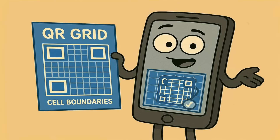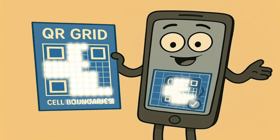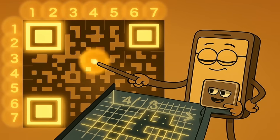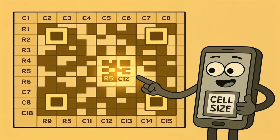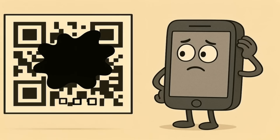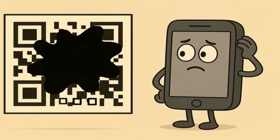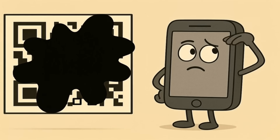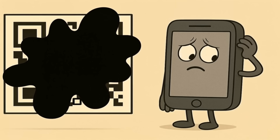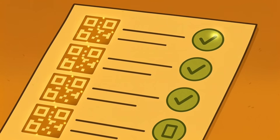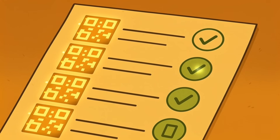Now the phone doesn't have to guess where each little square begins and ends. It knows the exact coordinates for every single dot in the message. It knows it can go to row 5, column 12, and find a specific piece of info. This is incredibly important. Without the timing pattern, the phone would be lost — unable to tell if a big black splotch is one big square or four little squares all smushed together. The gridlines make sure every single tiny square is accounted for, one by one.